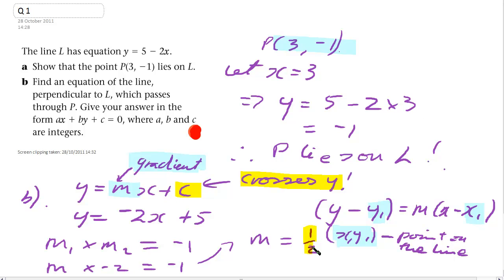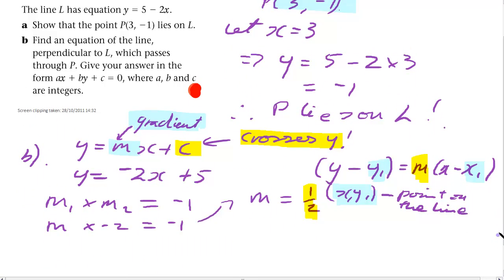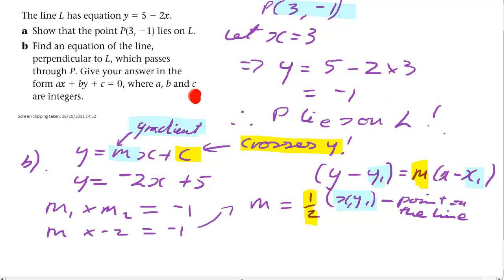OK, we worked out our gradient here. So there's our gradient there. So we've got everything. We've got that y1 value, the m value, and the x1 value. And we can just straight away write down the equation of our line. So let's write it down.